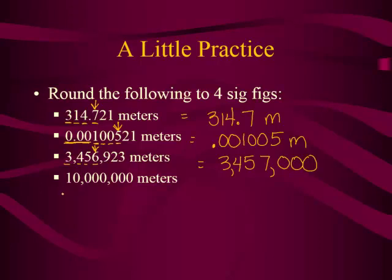Now we have the opposite problem — too few digits. One, two, three, four: you have to have those four digits. But how do I get four sig figs if I write the answer like this? That would be wrong — the value isn't correct and it only has one sig fig. How could I possibly make this four sig figs? Scientific notation. Express it in scientific notation — for example 3.670 — and that gives you four sig figs while preserving the value.